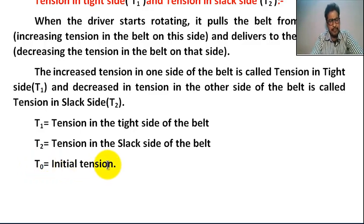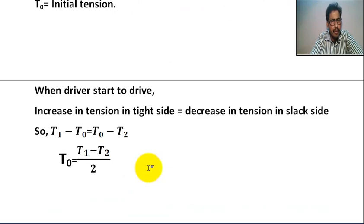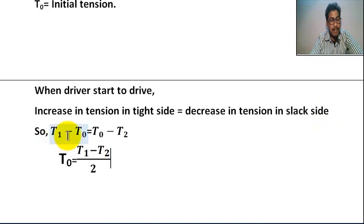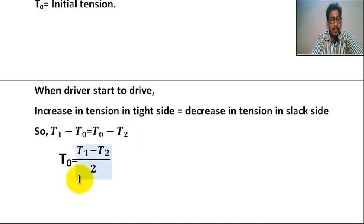T0 is the initial tension. When the driver starts to drive, the increase in tension in the tight side equals the decrease in tension in the slack side. So, T1 minus T0 equals T0 minus T2. Therefore, T0 equals T1 plus T2 divided by 2.